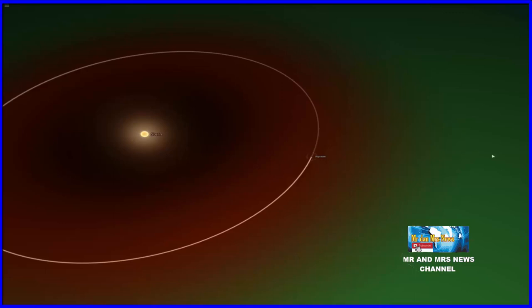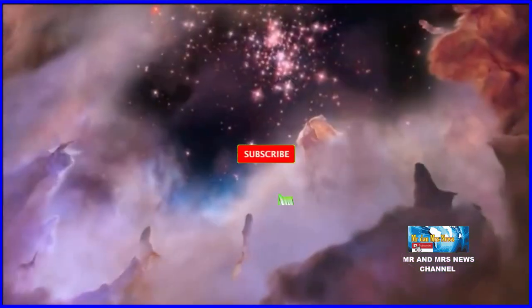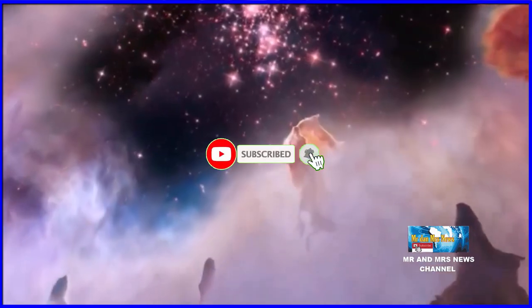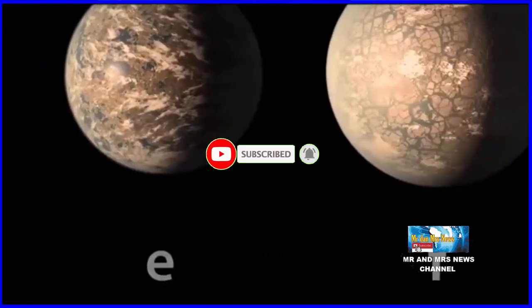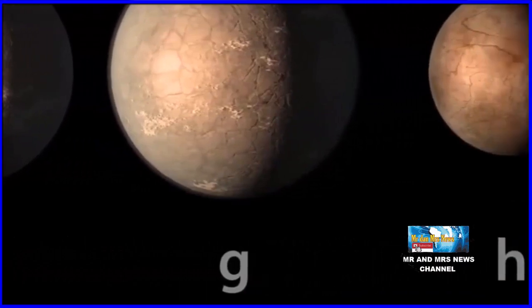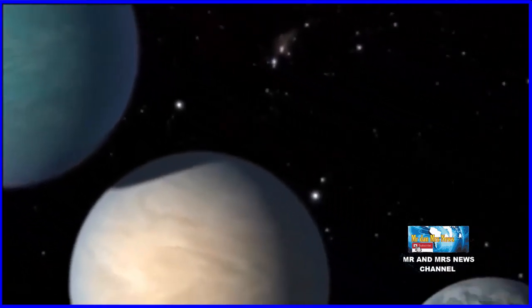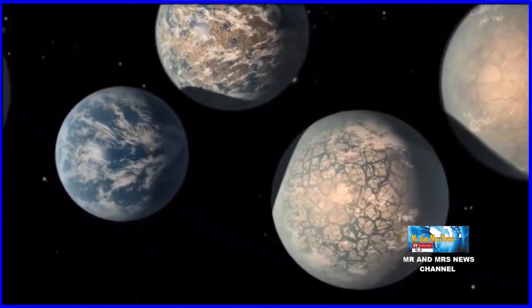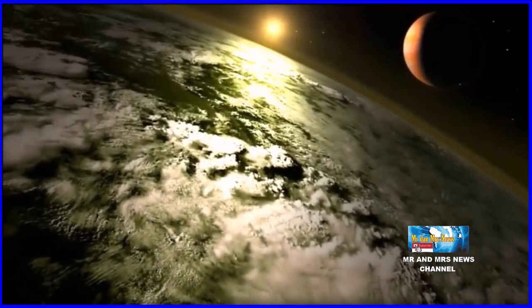Sejak penemuan pertama exoplanet pada 30 tahun lalu, sudah ada ribung planet di luar tata surya yang telah ditemukan hingga saat ini. Sebagian besar adalah planet yang memiliki ukuran bumi dan netunus, serta yang sering disebut sebagai planet superbumi atau planet mini netunus. Planet-planet ini berupa raksasa bebatuan atau es dengan atmosfer yang kaya hidrogen atau bahkan mengandung salah satu material di antaranya.